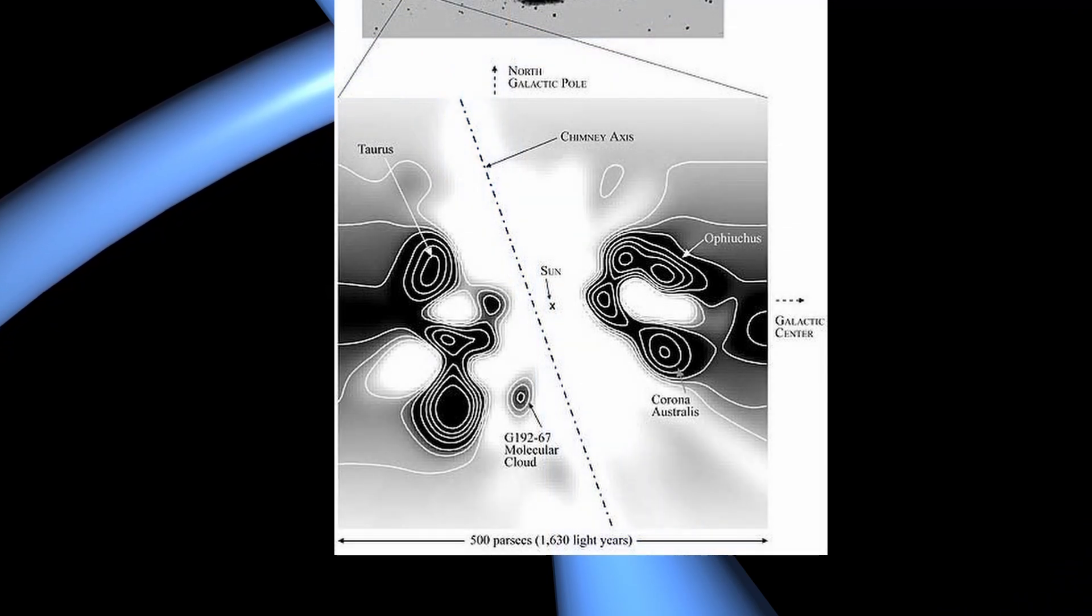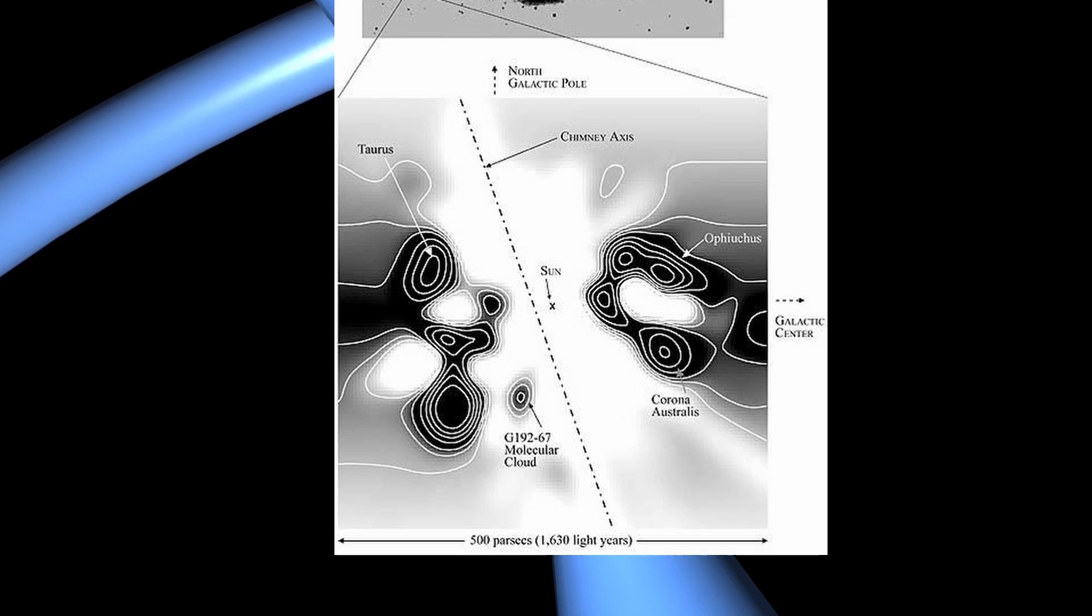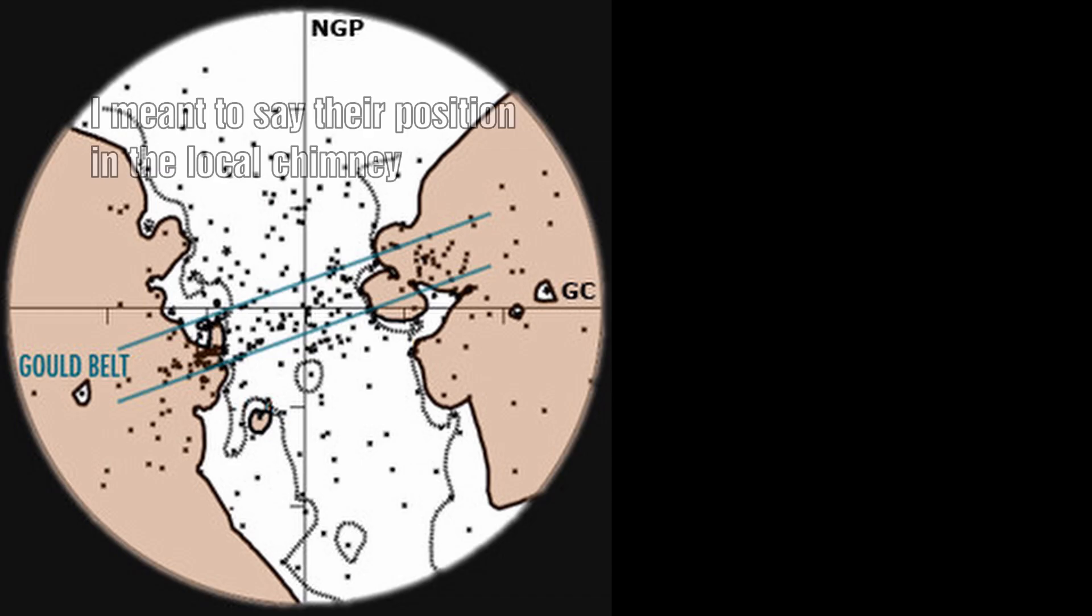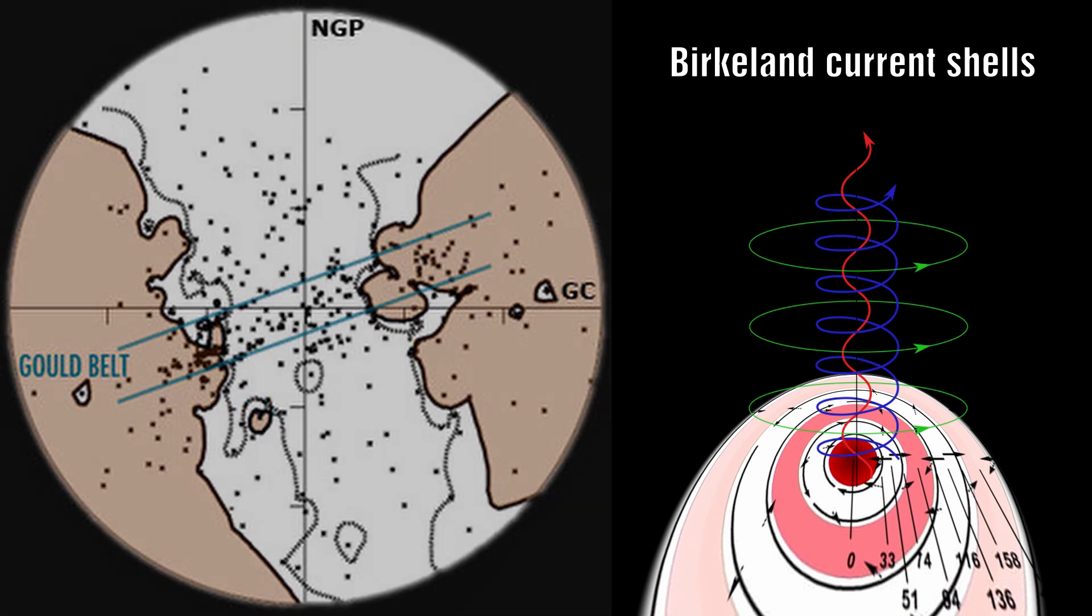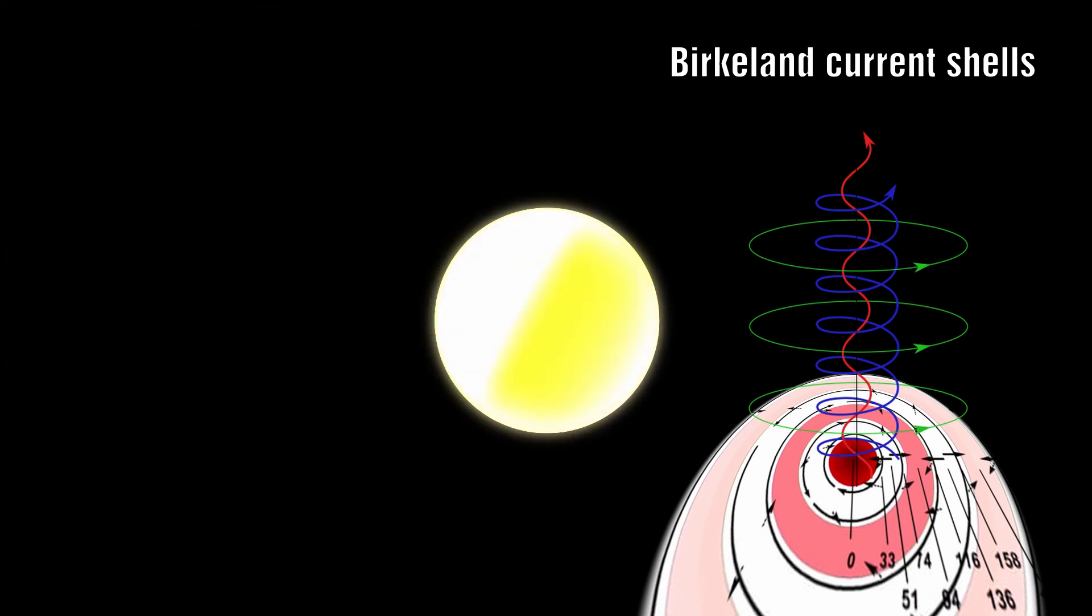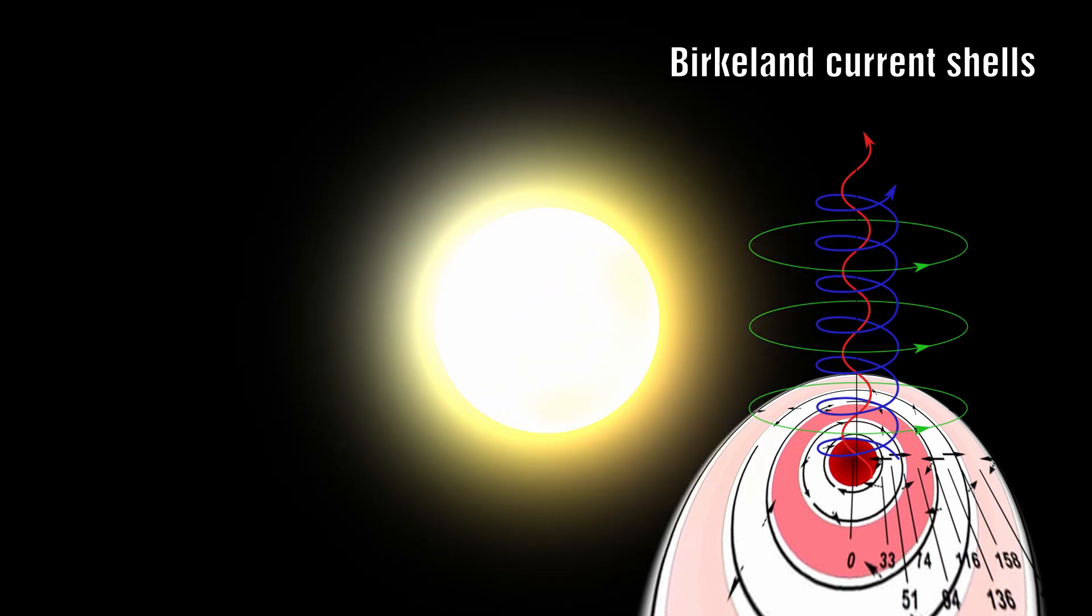And I believe that there is a relationship that is maybe at this point not very obvious, which is to do with their position in the Gould belt, their position within a Birkeland current, and also their velocity. And that those three factors may well determine the brightness of the star, the type of star it is, and whether or not it varies.